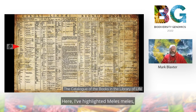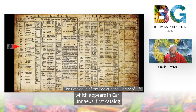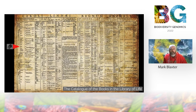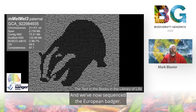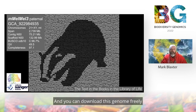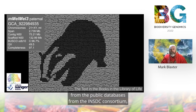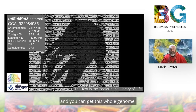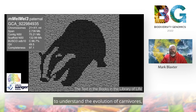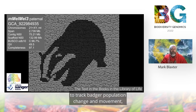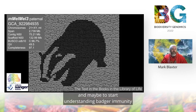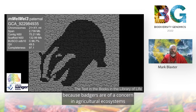Here I've highlighted Meles meles, the European badger, which appears in Carl Linnaeus's first catalogue. We've now sequenced the European badger and you can download this genome freely from the public databases from the INSDC consortium. This whole genome is now there for you and anybody else to work on — to understand the evolution of carnivores, to understand the evolution of social behaviour in badgers, to track badger population change and movement, and maybe to start understanding badger immunity, because badgers are a concern in agricultural ecosystems as a host for bovine tuberculosis.